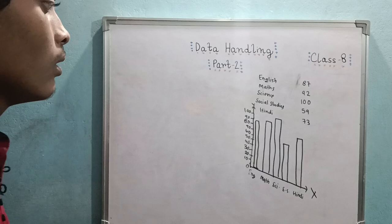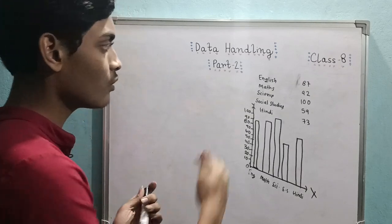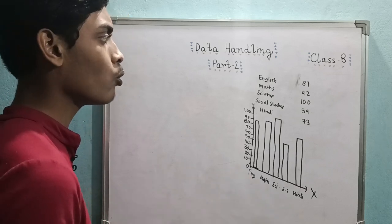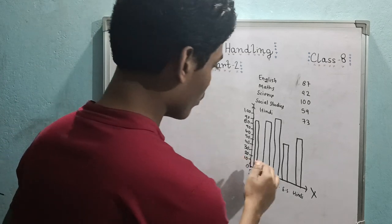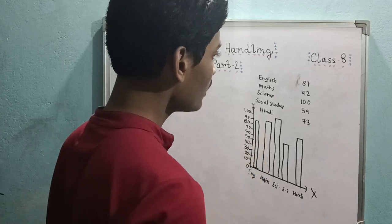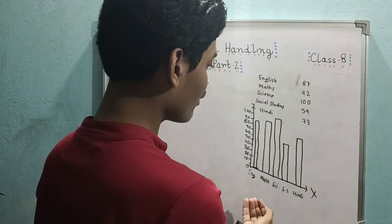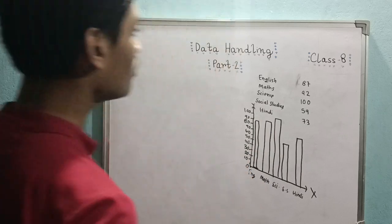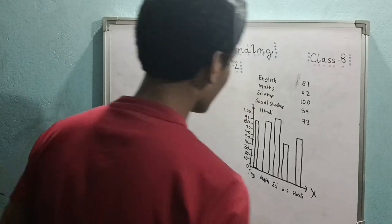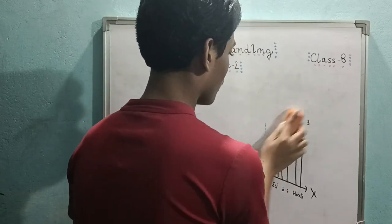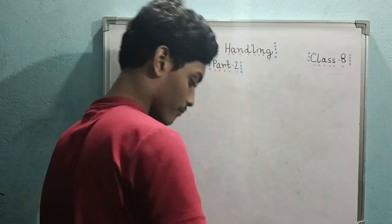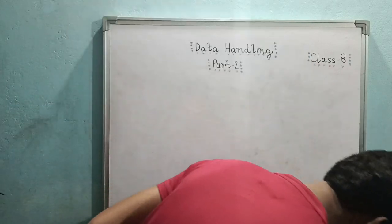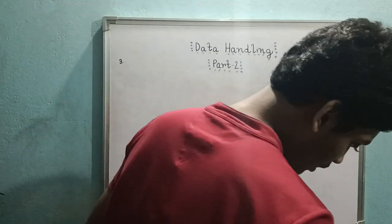That's the concept of a bar graph. On the x-axis you write your data — which are the subjects here. On the y-axis, you write the frequency or scores in regular divisions. For each data point, draw a vertical bar up to the corresponding frequency on the y-axis. That's how bar graphs work. Now let's look at real questions.